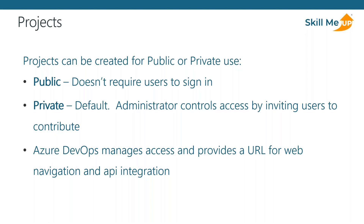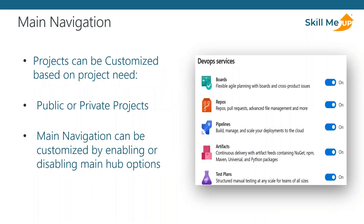Azure DevOps also provides a unique URL for API integration once a project is created, so you can programmatically drive the process within the project. Main navigation is really simple — it's essentially these hubs: Board, Repos, Pipelines, Artifacts, and Test Plans. Once you create a project, administrators can use the main navigation customization to enable or disable one or more of these hubs to right-size the capabilities of Azure DevOps to the team.